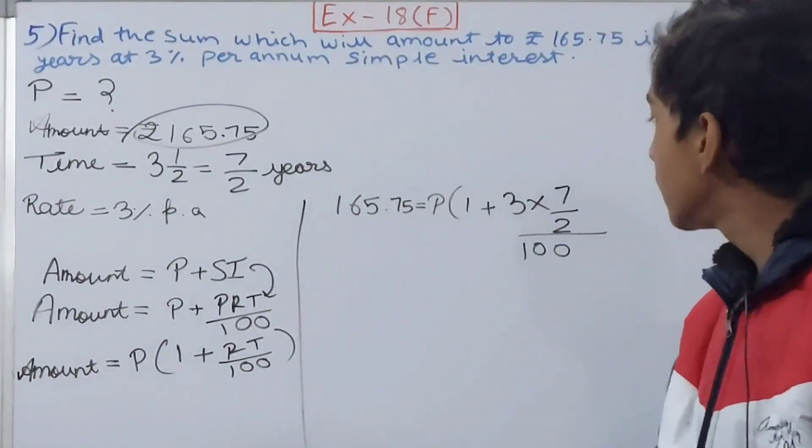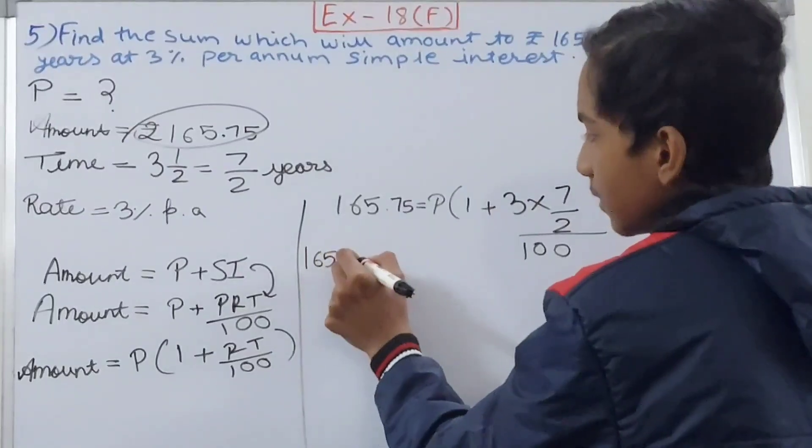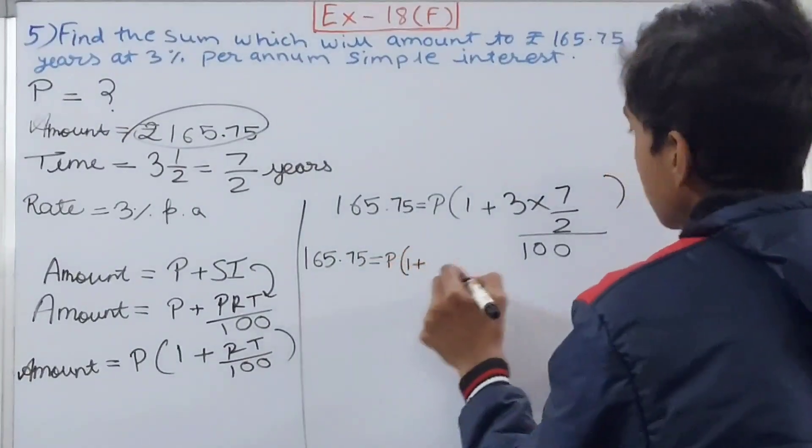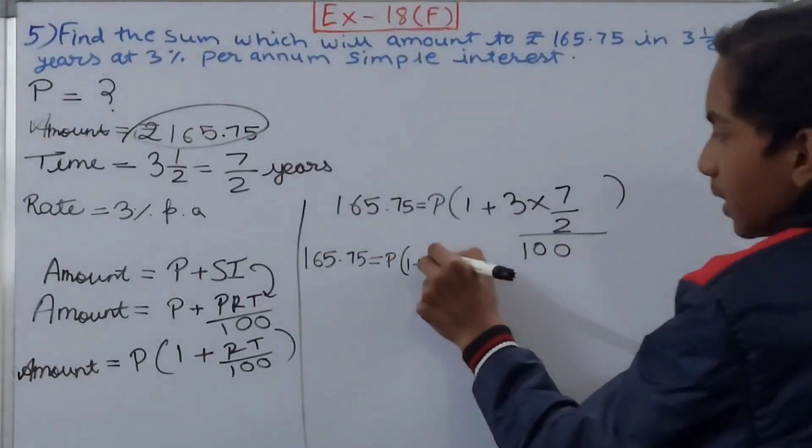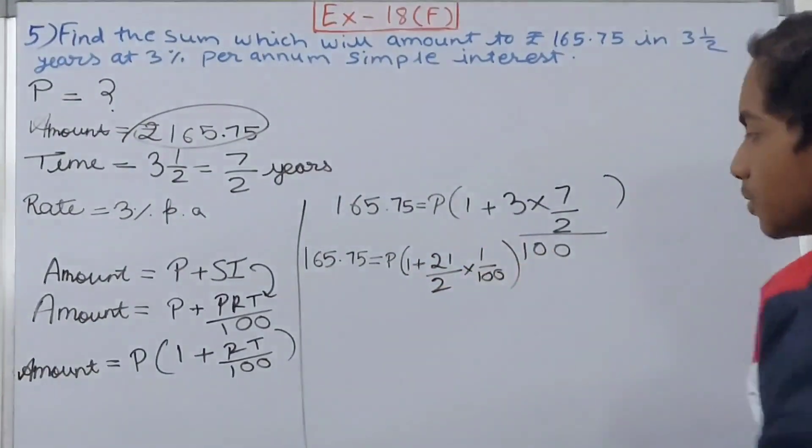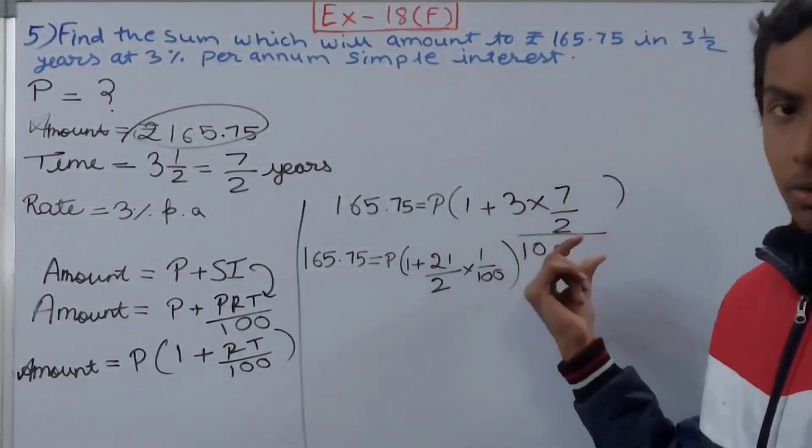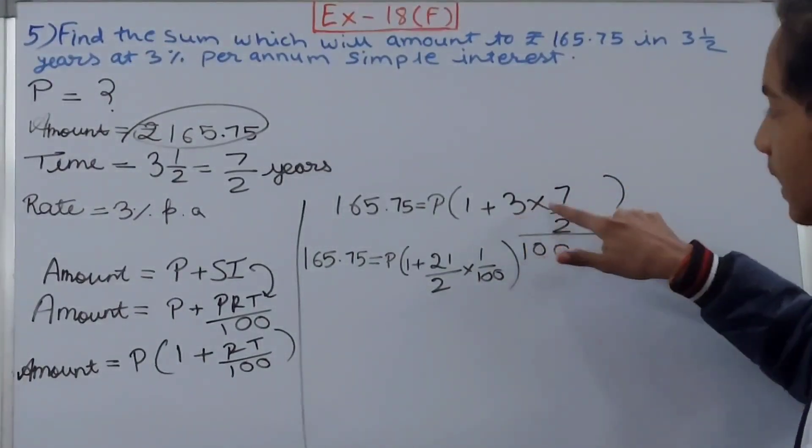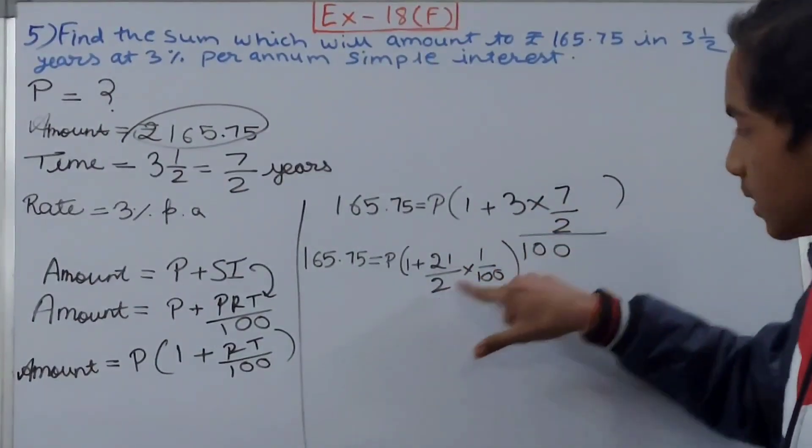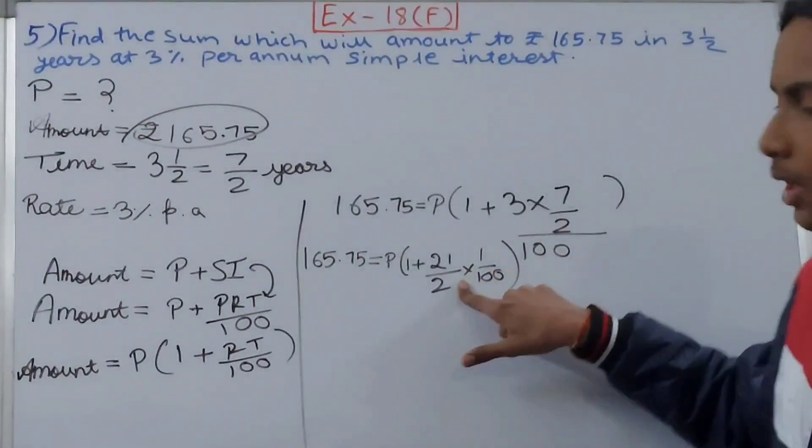Solve this up: 165.75 equals P(1 + 3×7/2×1/100). 3 and 2 cannot be cancelled, 7 and 2 cannot be cancelled, so we directly multiply 3 and 7 that gives us 21/2. This division changes to multiplication, and 100 will be reciprocated, so we get 1/100.